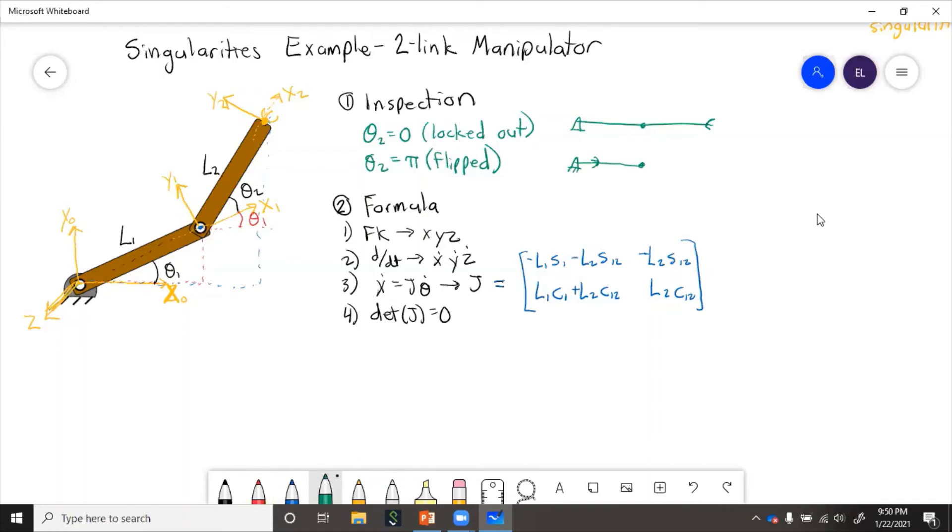So the determinant of this is going to be this multiplication minus this multiplication. So here we'll have zero equals...